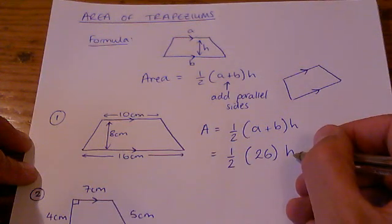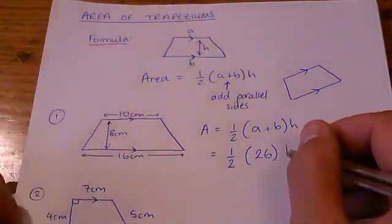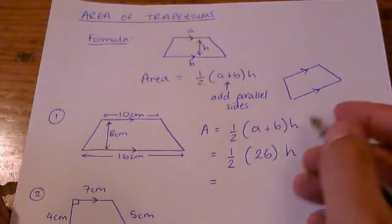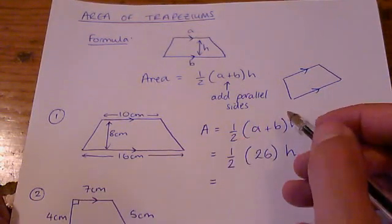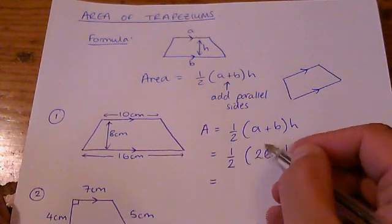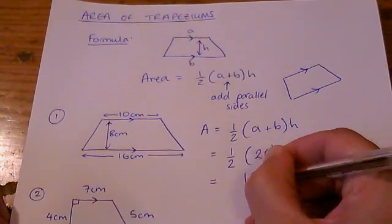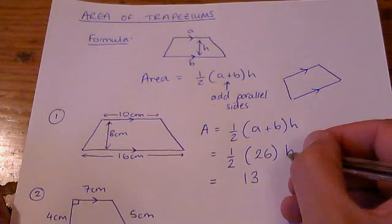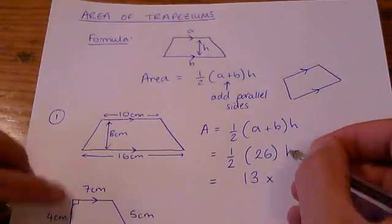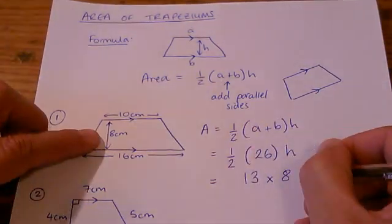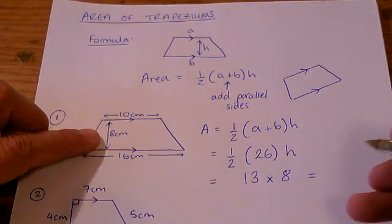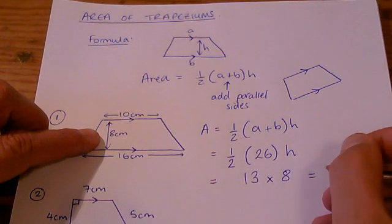Now that height I haven't put in just at the moment. I just made a mistake there really but I'll put it in on the next one. But I would suggest you always do the a plus b first and then half it. So half of 26 is 13 and then you can times by the height. The height is 8 in this case. And 13 times 8 gives you 104.